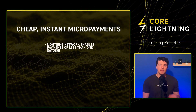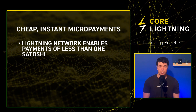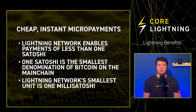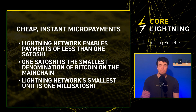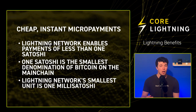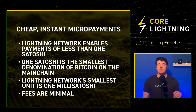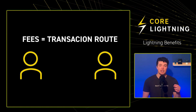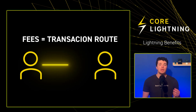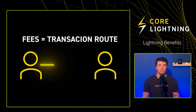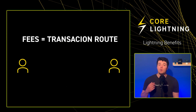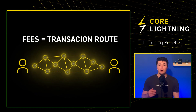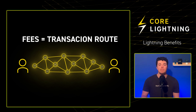The Lightning Network enables payments of less than 1 satoshi. While 1 satoshi is the smallest denomination of Bitcoin on the mainchain, the Lightning Network's smallest unit is 1 mSatoshi, with 1,000 mSatoshis equaling 1 satoshi. Since the Lightning Network doesn't rely on miners, fees are minimal or even non-existent. When sending a transaction, fees depend on the transaction's route. If you're directly connected to a peer and want to send them some sats, you can set the fee to 0, assuming mutual trust. However, when sending to an unconnected individual, the Lightning Network will find the fastest route, and if nodes along the way charge fees, your overall fee might increase.